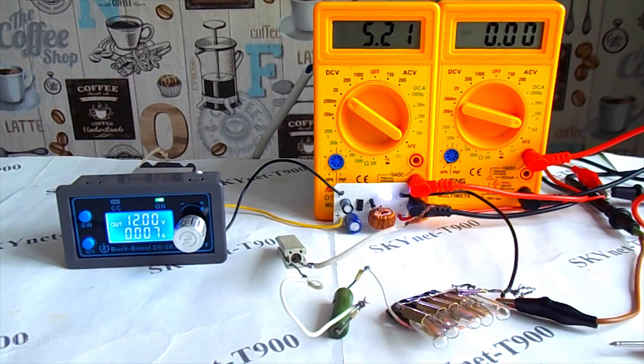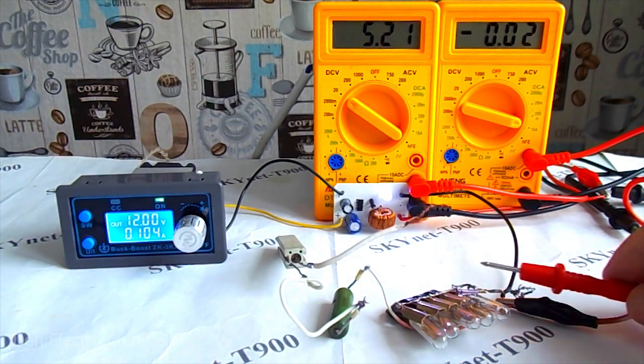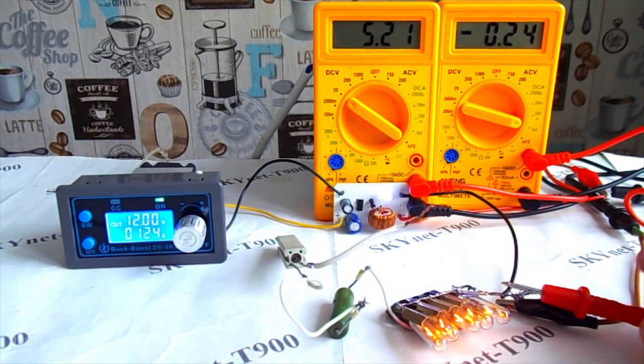The output is 5.2 volts. I connect the light bulbs. The voltage at the output of the converter did not subside, and the current consumption became 250 milliamps.